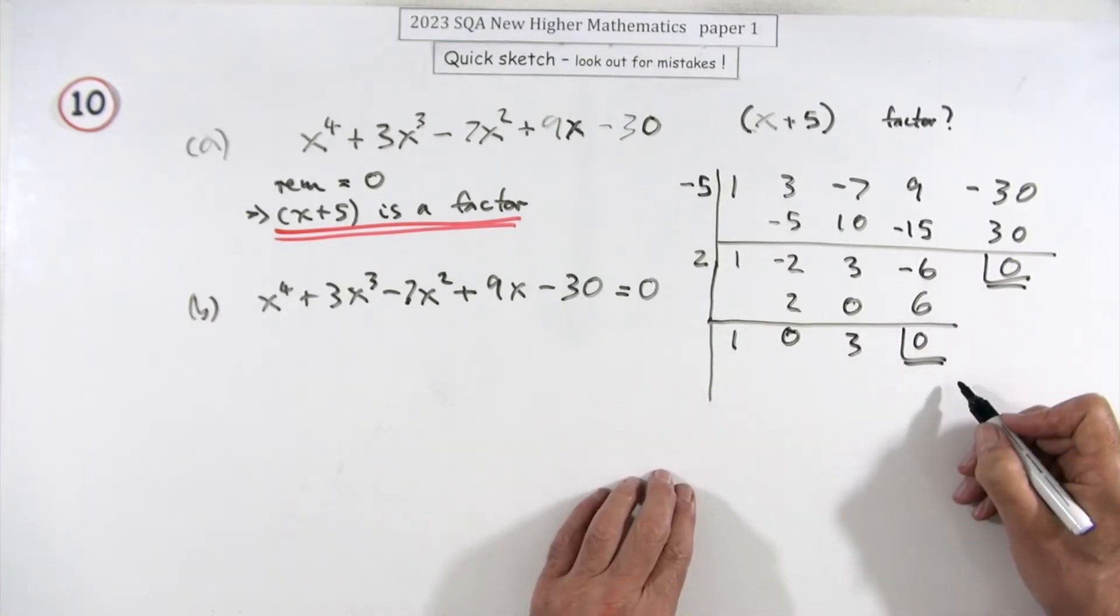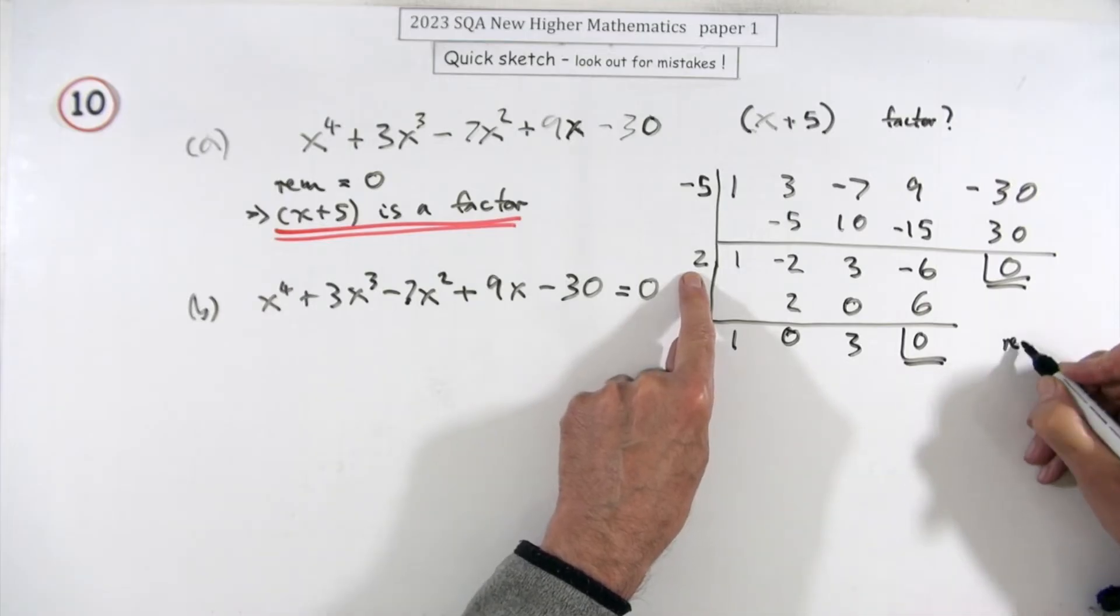Remainder equals zero, so x minus two is a root and is a factor. That's you done because now you're down to the quadratic.